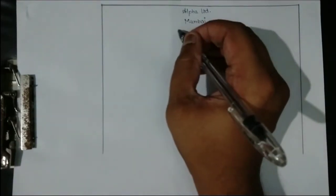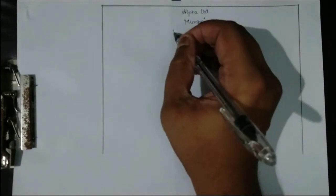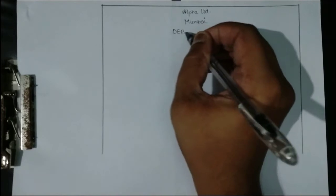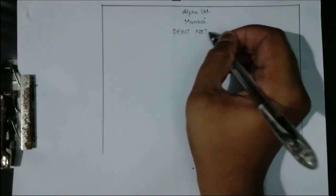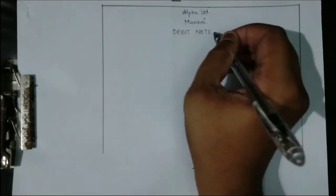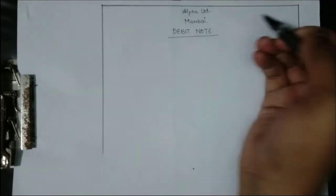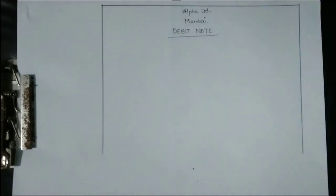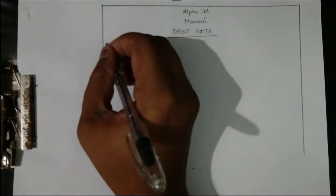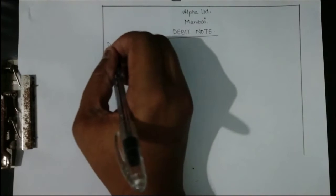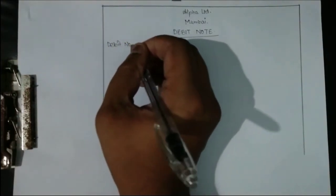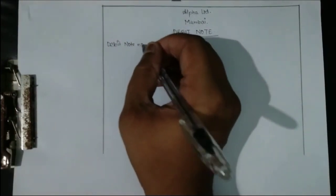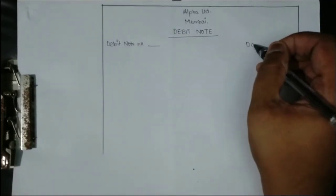Then I am going to write the words 'Debit Note' in bold in the center and underline it. After this, I will write the debit note number on the left side and the date on the right side.